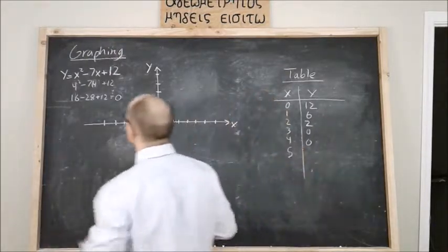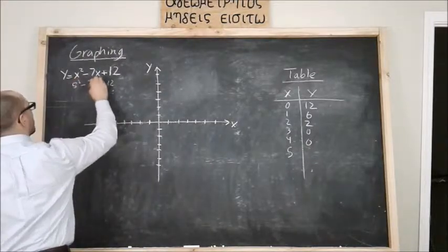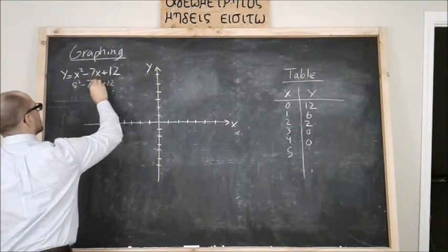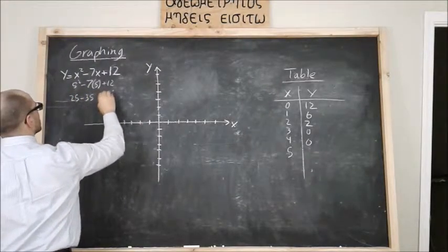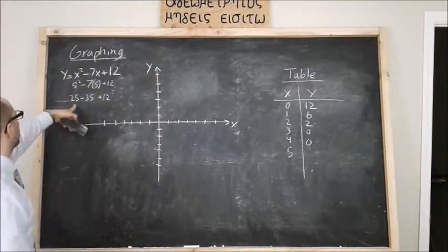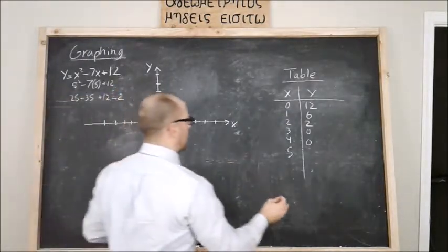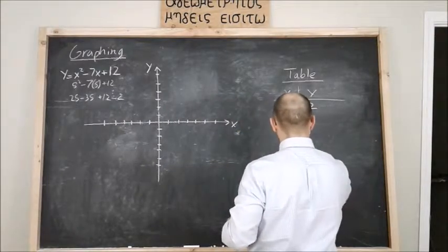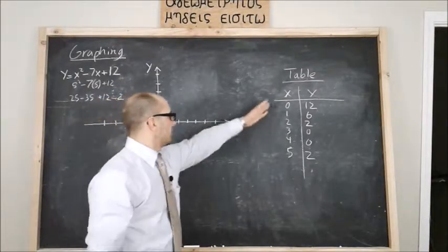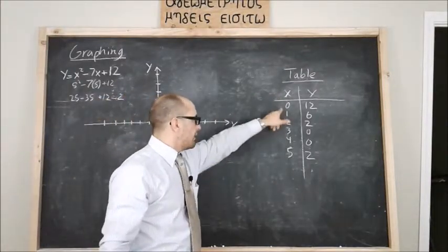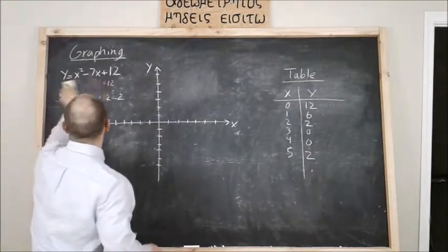Now five: five squared, seven times five, 12. So 25 minus 35 plus 12, 25 plus 12 is 37 minus 35 is 2. So I've spat out some numbers, I've plugged in the x values to spit out the y values.